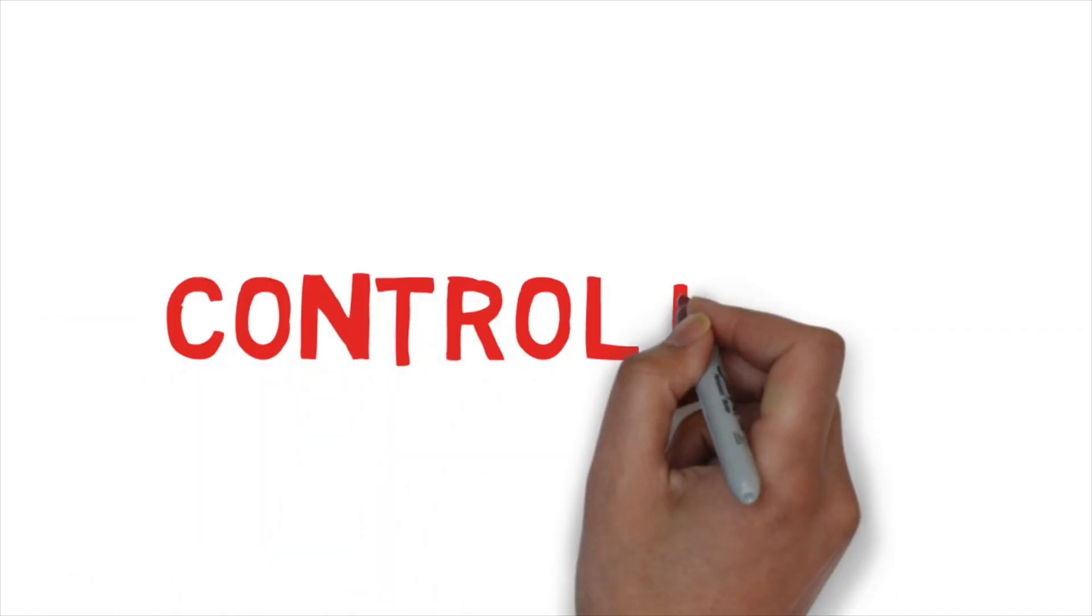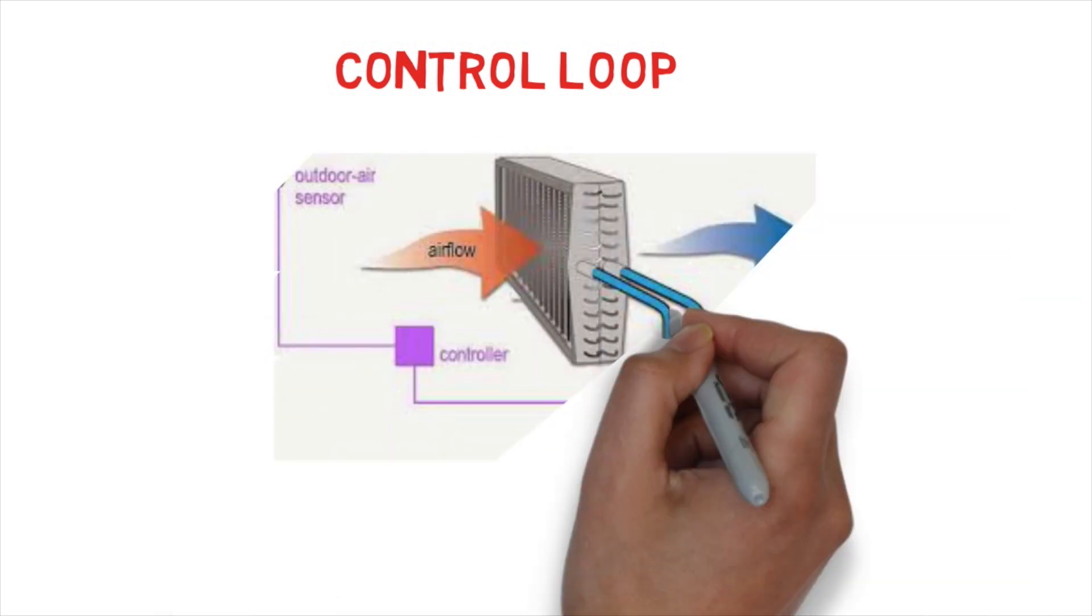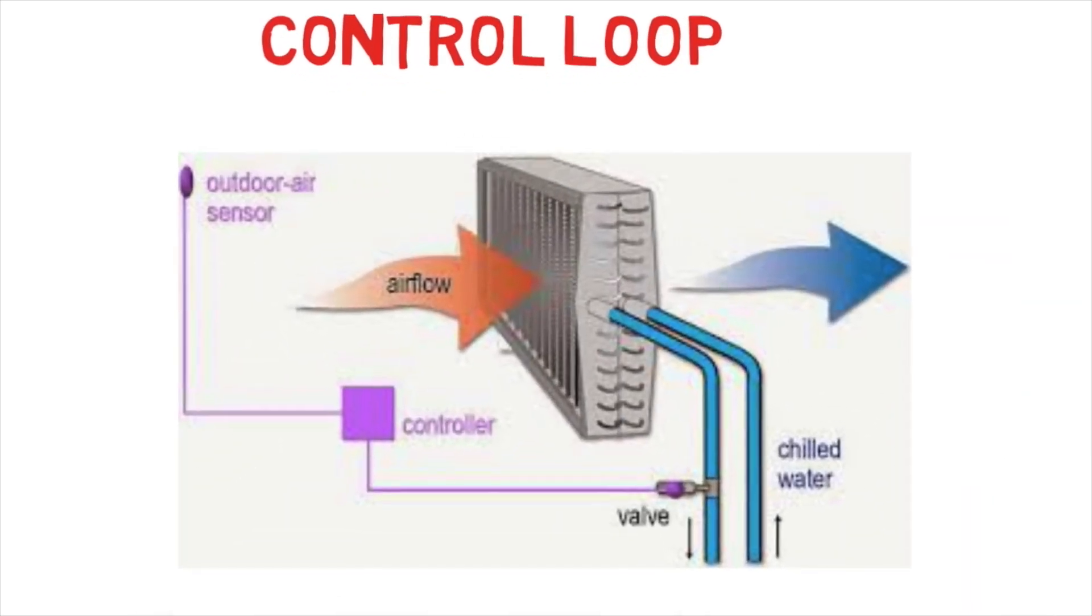First, we need to understand what comprises a control loop. There are three elements: the sensor, the controller, and the controlled output, which is typically a valve or a damper in HVAC. The sensor is usually testing something like temperature. The controller allows us to create a set point, and then based on how close we are to set point, a signal is sent out to the actuator that controls the valve or the damper.